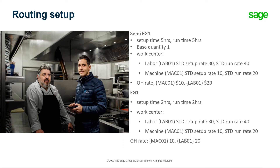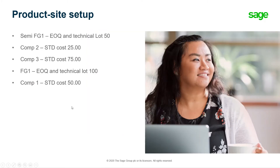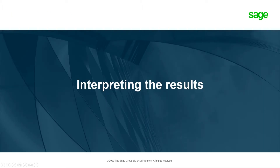The machine has a setup rate of 10 and run rate of 20. Additionally, on the routing for the machine I have an overhead of $10 and a labor overhead of $20. For the finished good, the setup time is two hours and runtime is two hours, with the same work center rates and overheads — $10 and $20. For the product site, the semi-finished good EOQ is 50, component 2 standard cost is $25, component 3 standard cost is $75, the finished good EOQ is 100, and component 1 standard cost is $50.